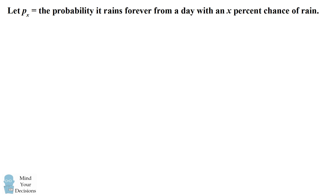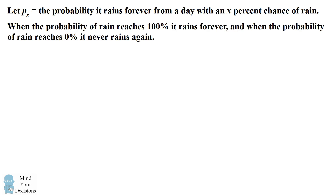We'll set up the problem by writing p sub x to mean the probability it rains forever from a day with an x percent chance of rain. When the probability of rain reaches 100%, it will rain forever, and when the probability of rain reaches 0%, it never rains again. According to our notation, this means p sub 100 is equal to 1 and p sub 0 is equal to 0. We're interested in the intermediate probabilities, which will depend on the probabilities of these other states.